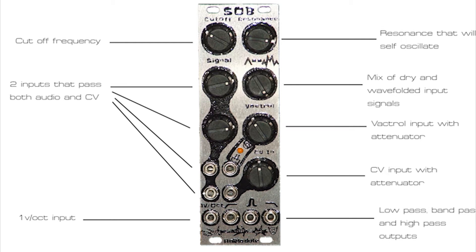At full level both of these inputs can clip, which fattens up and saturates the waveforms coming in. It also has a wave folder which is pre-filter and works with one knob, which is a mix of the input signal and the folded signal.